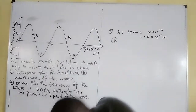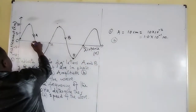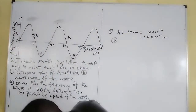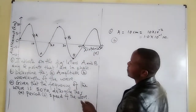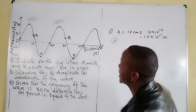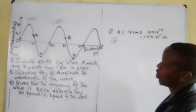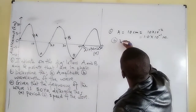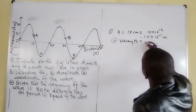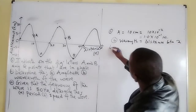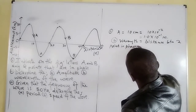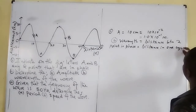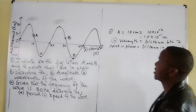We are also told to determine the wavelength. The graph shows distance values of 10, 20, 30, 40, and 50 meters on the horizontal axis. The wavelength is the distance between two crests, or the distance between two points in phase, which equals the distance covered in one complete cycle — one oscillation.